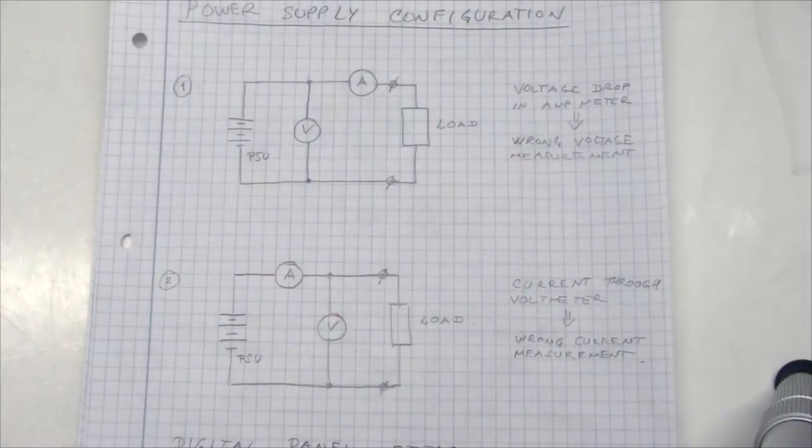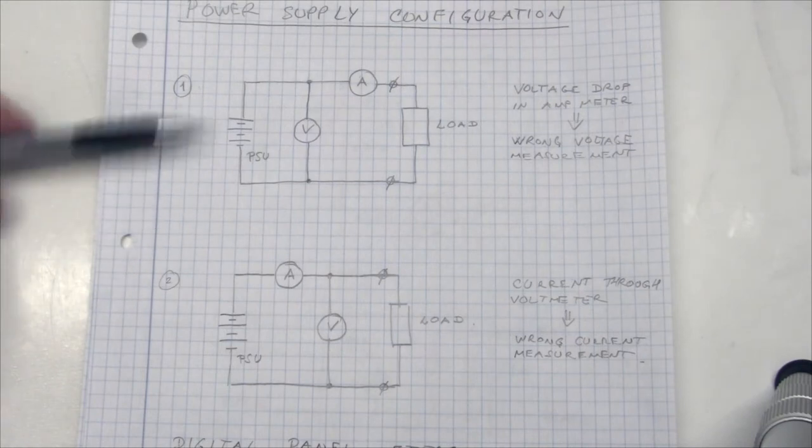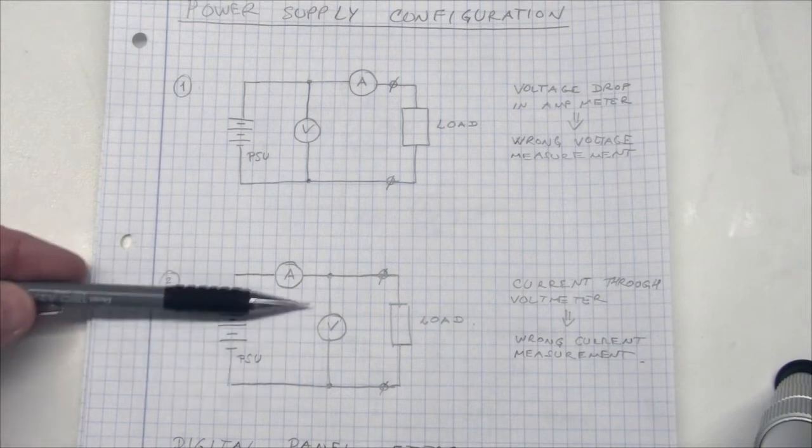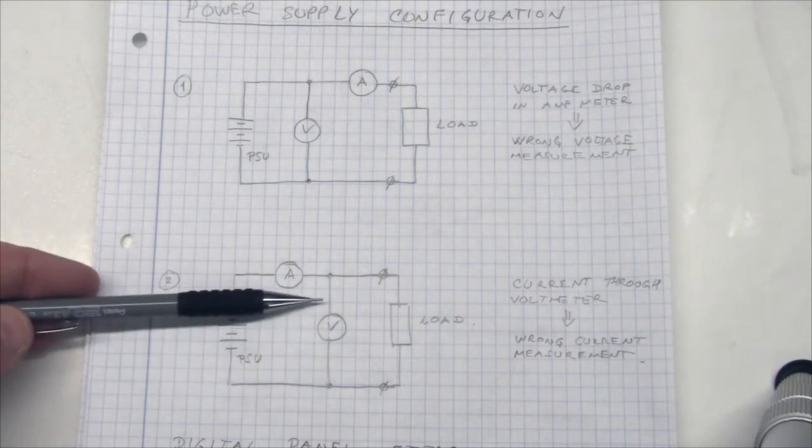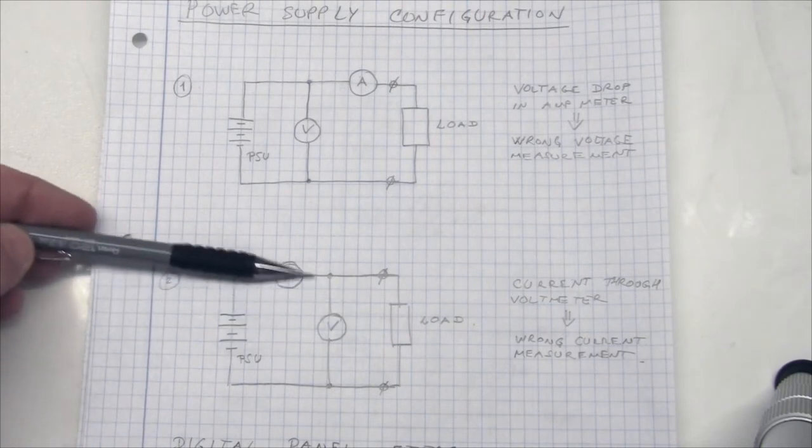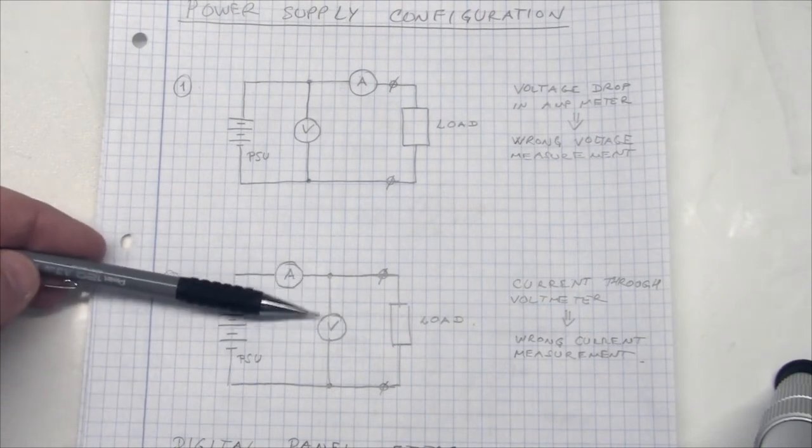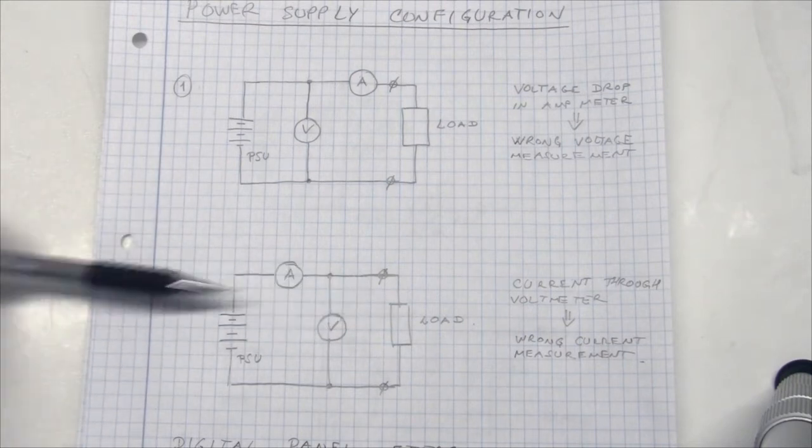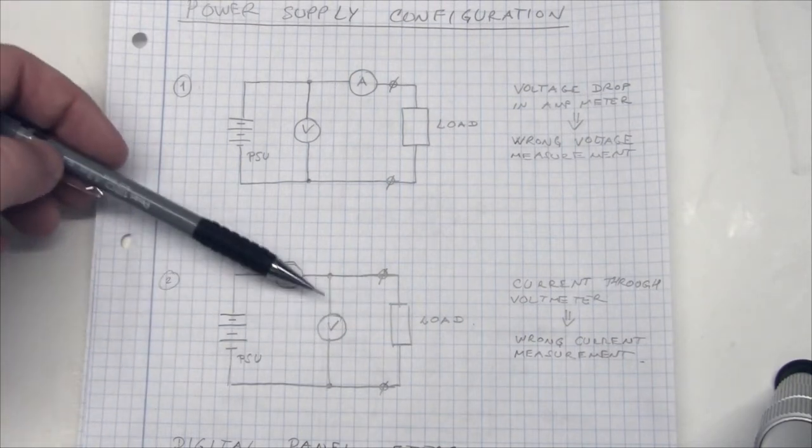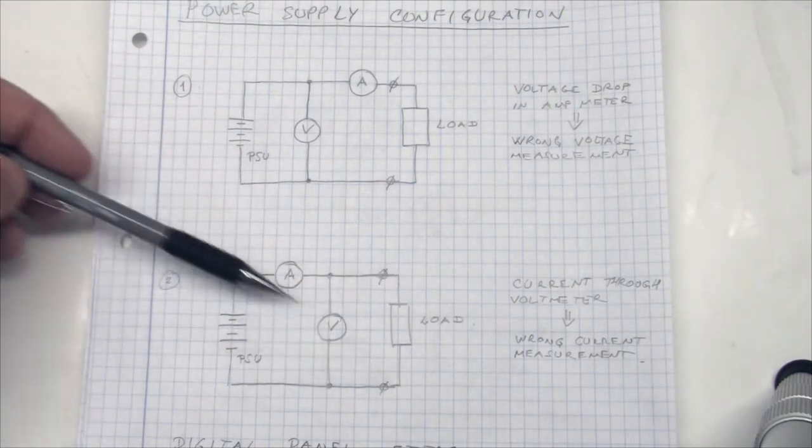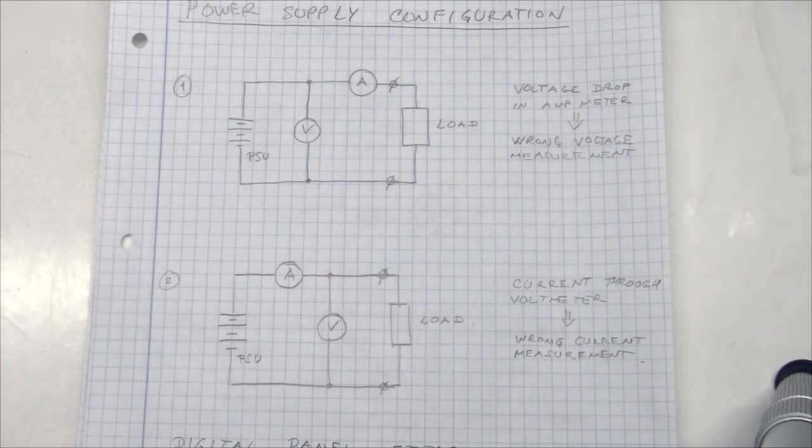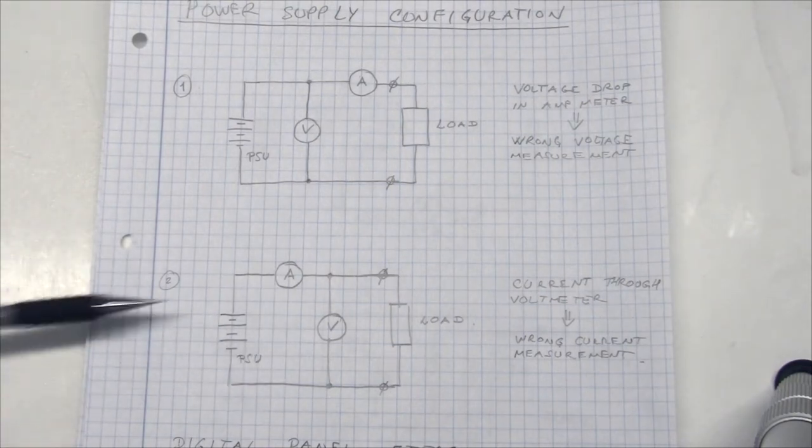We are back again. If we look at the two configurations, it is very obvious that we need to use configuration two. Because the current flowing through this voltmeter is so low compared to the load. We have an input impedance here of 270 kilo ohm, which is generally way higher than the load here. So the percentage of current running through this meter compared to the current running through the load is practically zero. So we have to use configuration number two.